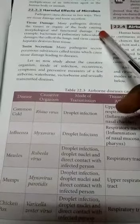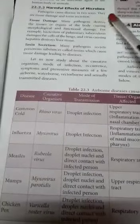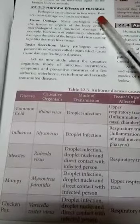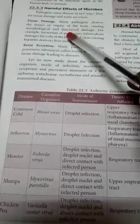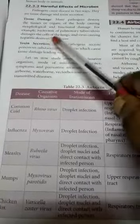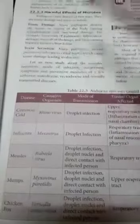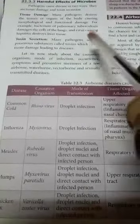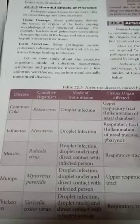Now we are going to study the harmful effects of microbes. Some microbes attack organs and organ cells — these are called pathogens, causing disease. For example, tuberculosis attacks the lungs and lung cells. Hepatitis virus attacks the liver. Many pathogens also create poisonous substances called toxins, which cause disease.